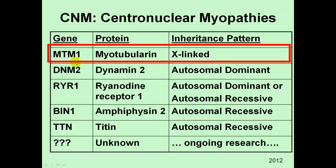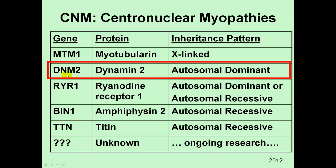Starting with the most common and longest-known version: the MTM1 gene mutation causes problems with a protein called myotubularin, and this causes an X-linked inheritance pattern. This is typically referred to as X-linked myotubular myopathy, abbreviated XLMTM. X-linked MTM affects essentially boys exclusively. Women carrying this mutation would typically be carriers who do not have symptoms, or certainly not the full-blown symptoms that half of their sons would have.